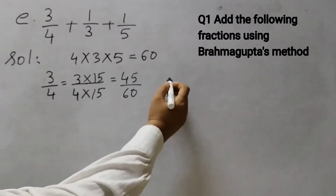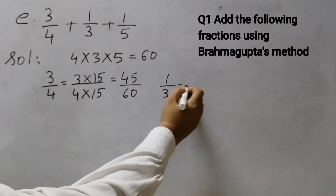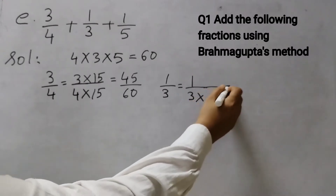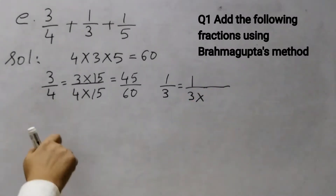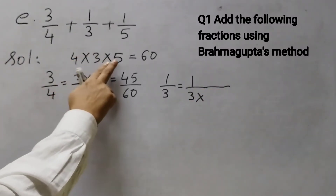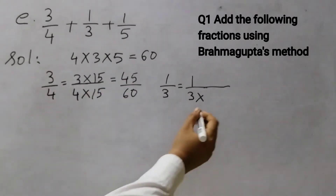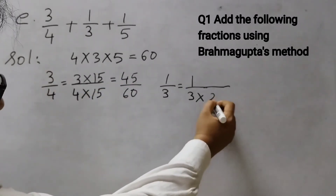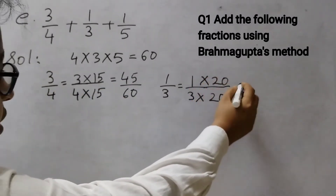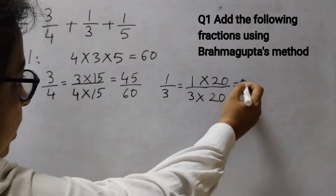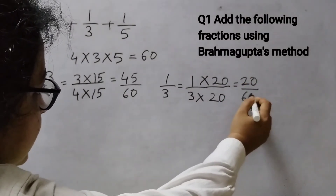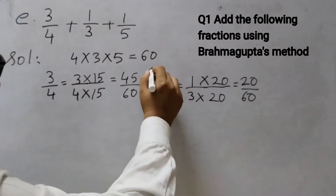Next one is 1/3. What number do I multiply with 3? Same rule — hide 3. You have 4 and 5 remaining. 4 × 5 = 20. Multiply the numerator also: 1 × 20 = 20 over 60. So 1/3 becomes 20/60.